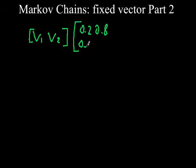So given the fixed vector v1, v2, multiplying this by this transition matrix will result in the same fixed vector.